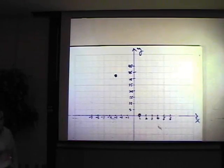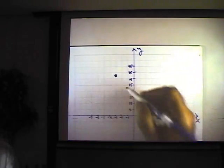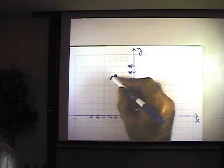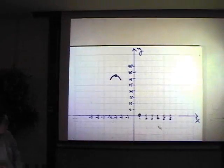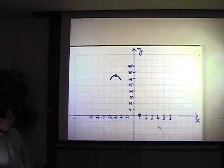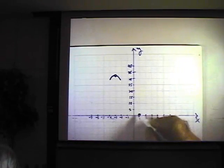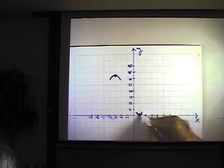We also know at negative 3, we have a relative maximum, that means function is peaking here, something like that. At 1 comma 0, we have a relative minimum, function is doing this type of behavior.